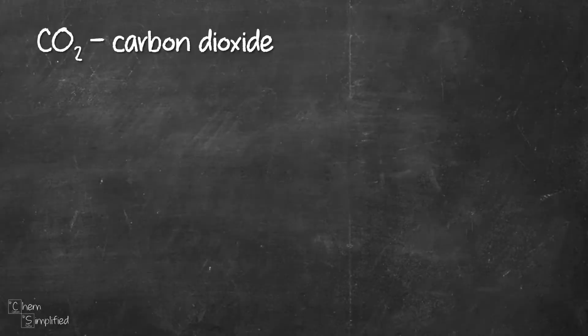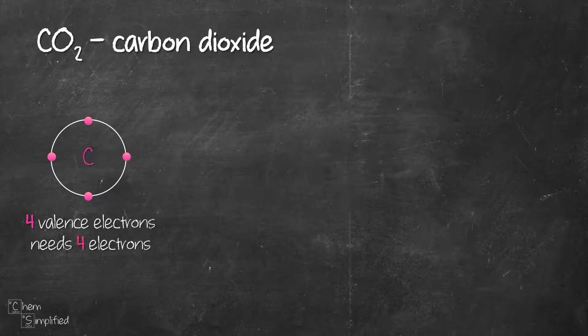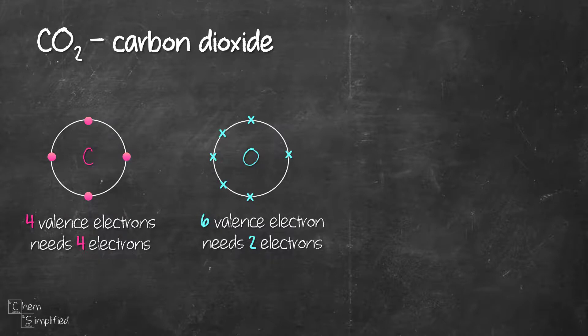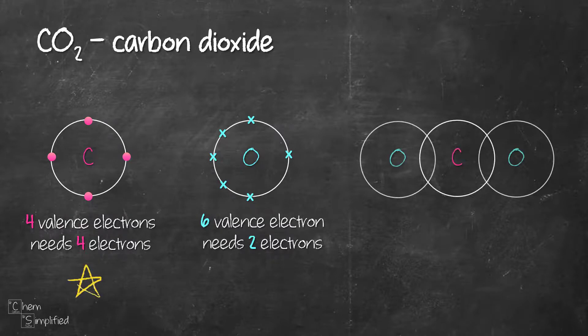Last but not least, carbon dioxide, CO2. Carbon has four valence electrons and needs four more to become octet. Oxygen has six and needs two more to become octet. Since carbon needs more electrons, we're going to place it in the center, surrounded by oxygen. Since oxygen needs two electrons to become octet and is only connected to one atom — carbon — we're going to make it share two electrons in the center with carbon.